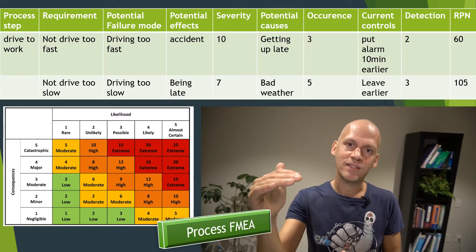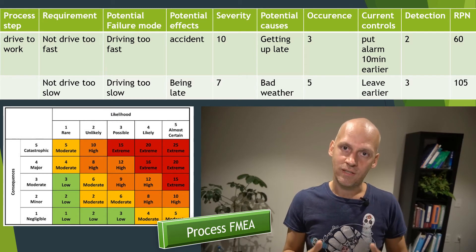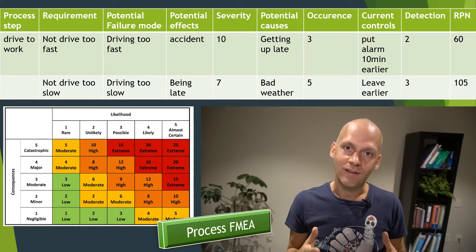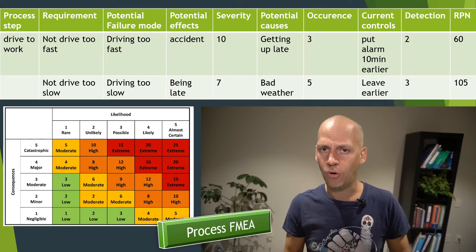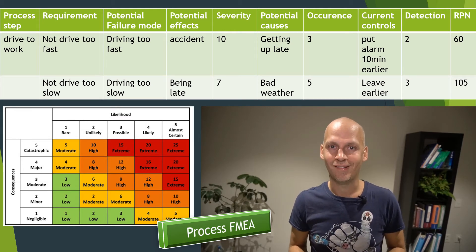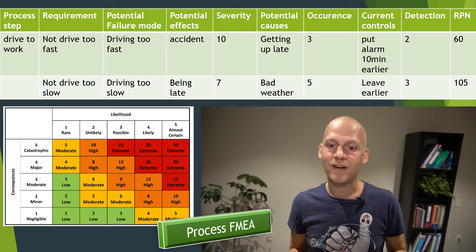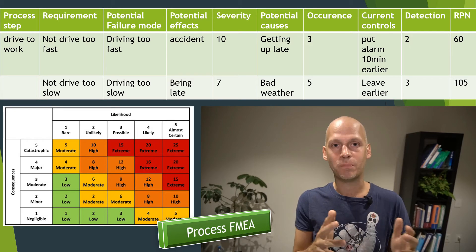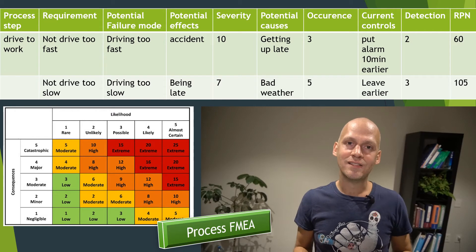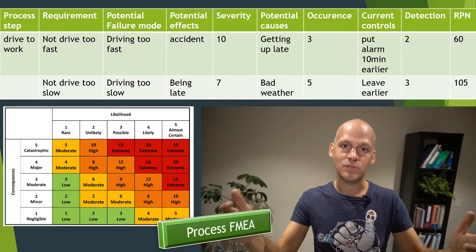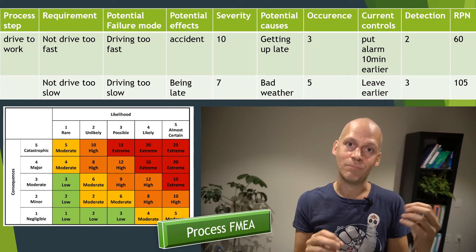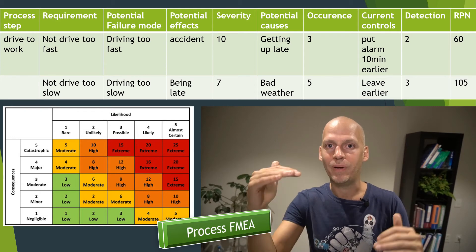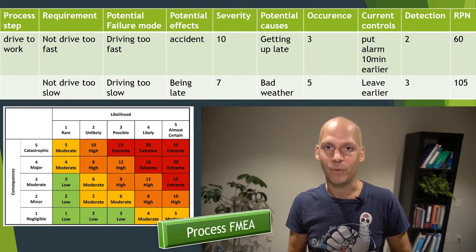If I'm not able to detect an issue at all, detection would be a 10 — everything I do wrong automatically affects my customer or company. A 1 means I can always detect it, and a 2 means I can almost always detect it and avoid the issue. So now I have severity 10, occurrence 3, and detection 2. I multiply them: 10 times 3 is 30, times 2 is 60. This gives me my risk priority number of 60. The RPN ranges from 1 to 1000 — a maximum of 10 times 10 times 10.